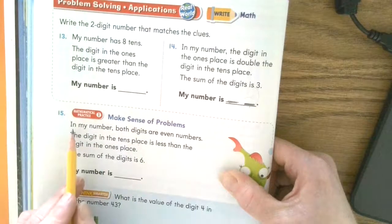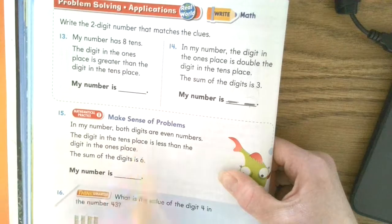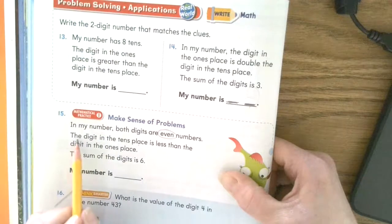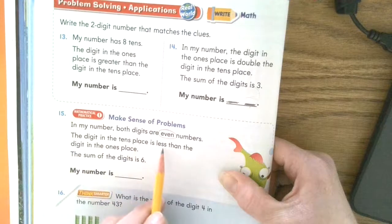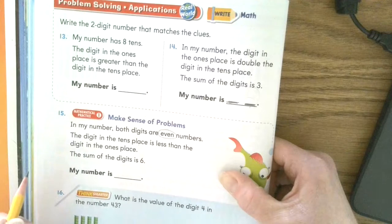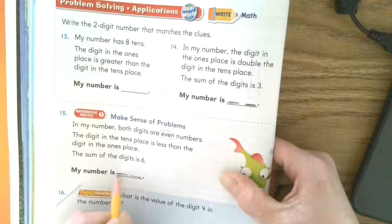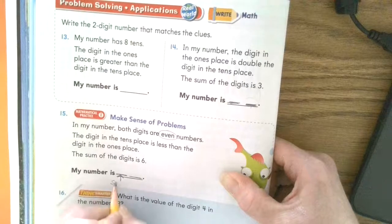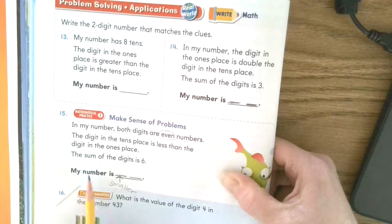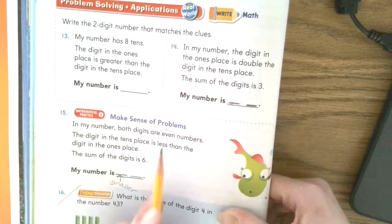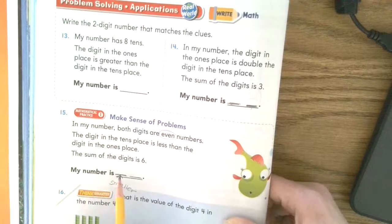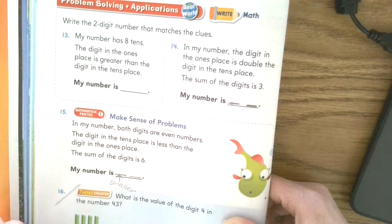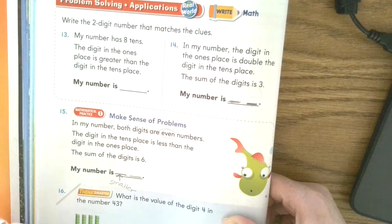Down here, same thing. In my number, both digits are even numbers. The digit in the tens place is less than the digit in the ones place. So we're going to draw two lines again. The digit in the tens place is less. So here's the tens place. This is going to be a smaller digit. And when you add up this digit plus this digit, you're going to get six. The sum of the digits is six. So what could go there?